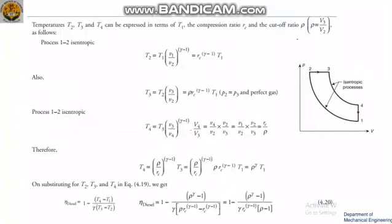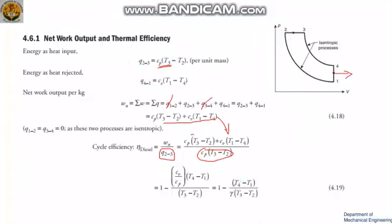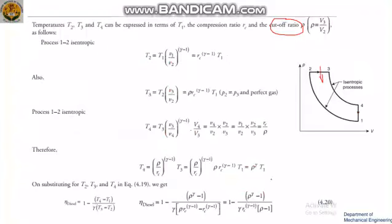In the Diesel cycle, you will come across a term called the cut-off ratio, which is V3 divided by V2, at the point where heat is supplied. You need to express the efficiency in terms of compression ratio and cut-off ratio, which means expressing all temperatures in terms of either the compression ratio or the cut-off ratio.